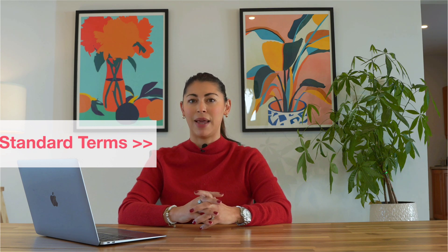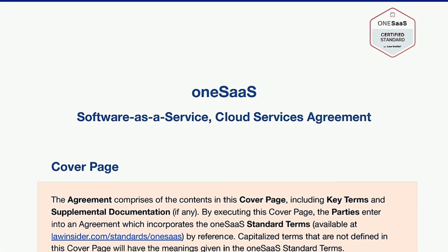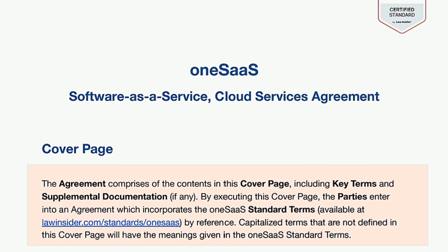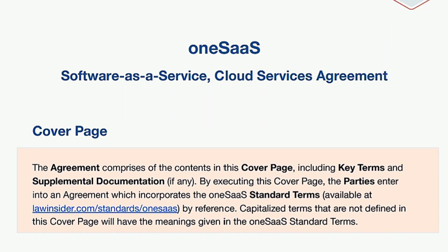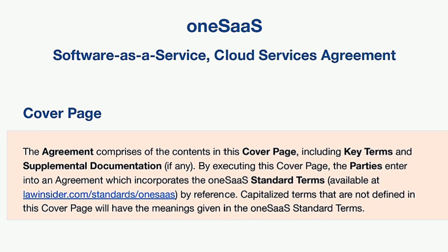The 1SAS Agreement consists of three main components. First, the cover page, which contains the details of the parties, the key terms, and any supplemental documentation. Second, the standard terms, which form the core legal framework and should remain unaltered. And third, the supplemental documents, which can be included as annexes and referenced in the supplemental documents table within the key terms. By executing the cover page, the parties automatically incorporate the 1SAS standard terms by reference. You may attach a reference copy if needed.